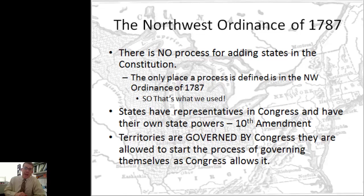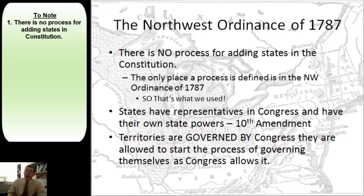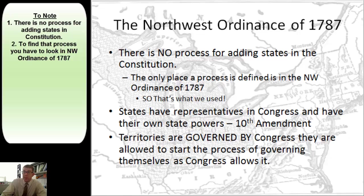I'll highlight for you the things that I think you should have in your notes. The first thing I would have in my notes is that in the Constitution, there is no process for adding states to the Union. That doesn't mean we're not going to do it — the Constitution just isn't where we'll find that information. The only place this exists is in an ordinance passed under the Articles of Confederation called the Northwest Ordinance of 1787.